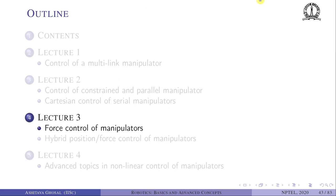To summarize, in this lecture we looked at Cartesian control of a robot, designing a controller using the position and orientation of the end effector, and showed how it can be extended to avoid obstacles. In the next lecture we will look at force control of manipulators and hybrid position-force control of manipulators.